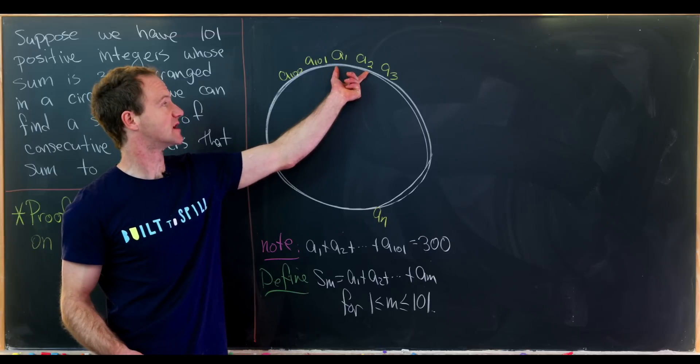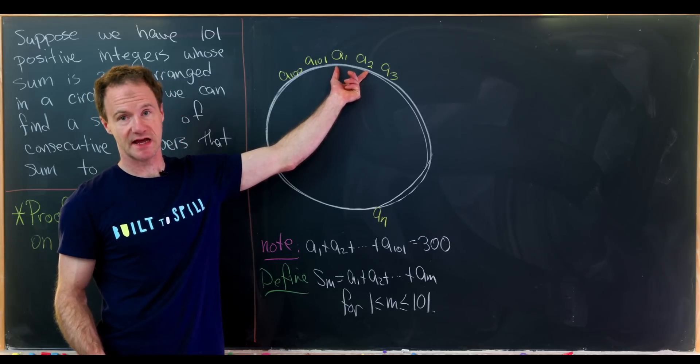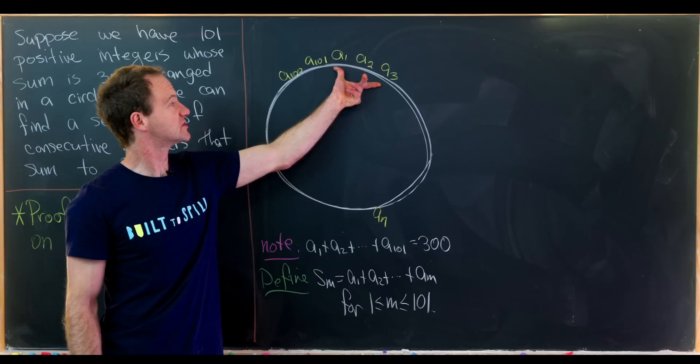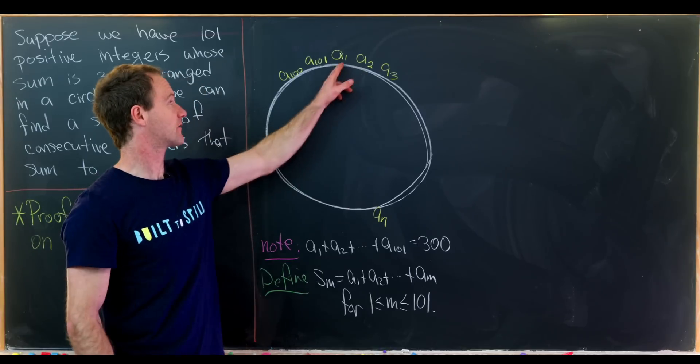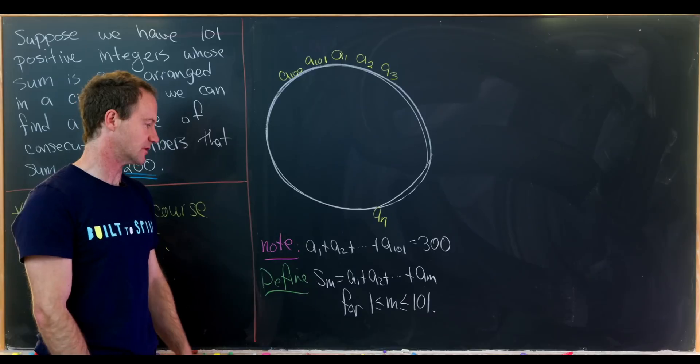So in fact we have 101 terms of this new sequence. So the first term would just be a sub 1. The second term is the sum along this arc from a1 to a2. The third term will be the sum along the arc from a1 to a3 and so on and so forth.